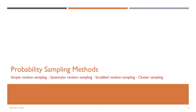There are several major probability methods, each with its own advantages and drawbacks. They are simple random sampling, systematic random sampling, stratified random sampling, and cluster sampling.